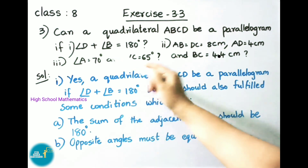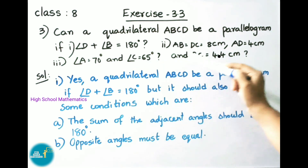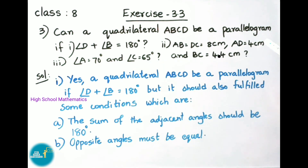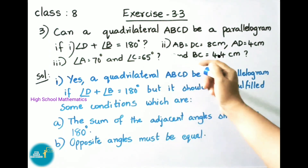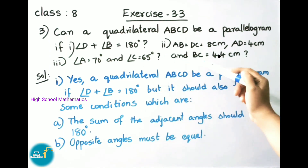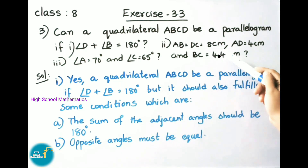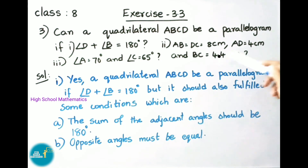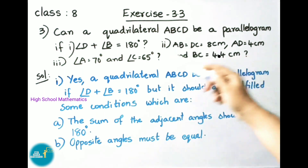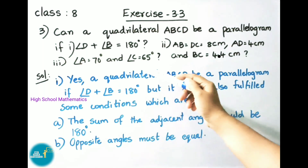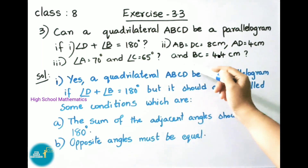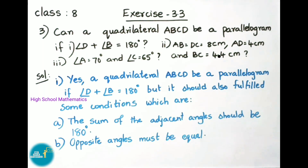Question number 3: Can a quadrilateral ABCD be a parallelogram if — (i) angle D plus angle B equals 180 degrees; (ii) AB equals DC equals 8 cm, AD equals 4 cm, and BC equals 4.4 cm; (iii) angle A equals 70 degrees and angle C equals 65 degrees? Let us see the solution.